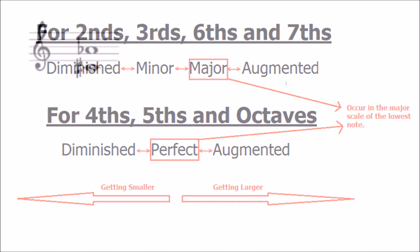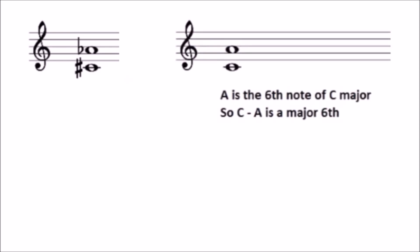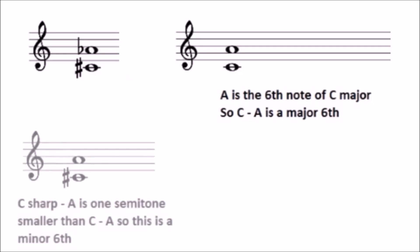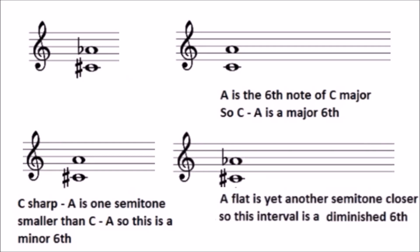The only problem may arise if the lower note is one of which you do not know the major scale. C sharp to A flat, for example, would be a little bit problematic because most people don't know the scale of C sharp major — but you do know the scale of C major. C to A is a major sixth because A is the sixth note of C major. So C sharp to A is a minor sixth because the bottom has gone up by a semitone. Then if we lower the upper note by a semitone as well, C sharp to A flat would become a diminished sixth, because A flat is yet another semitone closer to the C sharp than A natural.